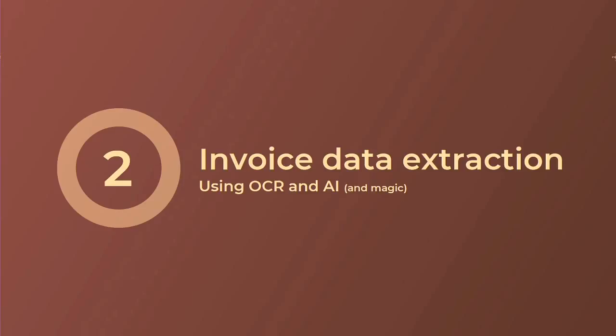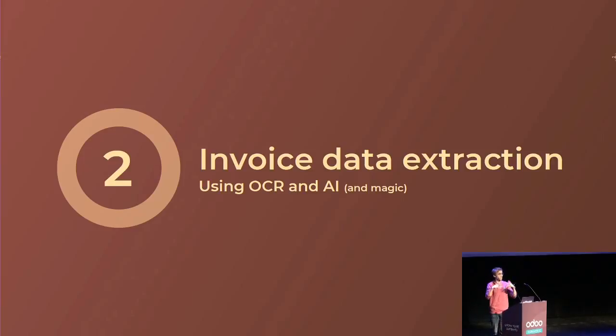The second way we can help James input all this data — and this is the AI part of the presentation — is our invoice data extraction. It uses two things and a bit of magic. First, it uses OCR, which stands for Optical Character Recognition. Without going into too much detail, it's basically an algorithm that reads through a scanned invoice, an image, a JPEG, or a PDF, and parses the text — translating what it sees in the image into actual strings of characters for a system to process.